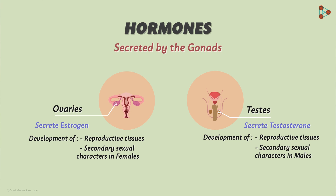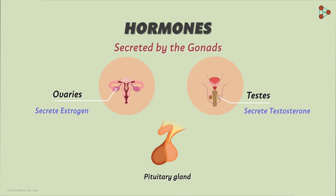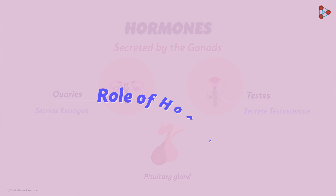Who controls the activities of these hormones in our body? The hormones regulate several processes, but who regulates the secretion of these hormones exactly? The mastermind to control all the hormonal secretions is the gland called the pituitary gland. Next, we will talk about these hormones, their major roles, and how they bring about all the necessary activities inside our body.